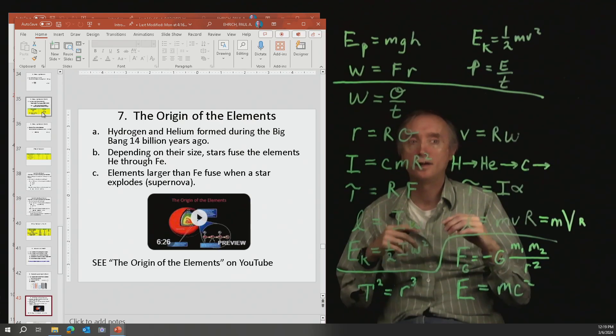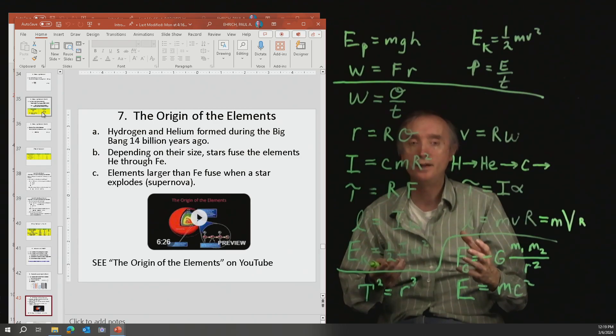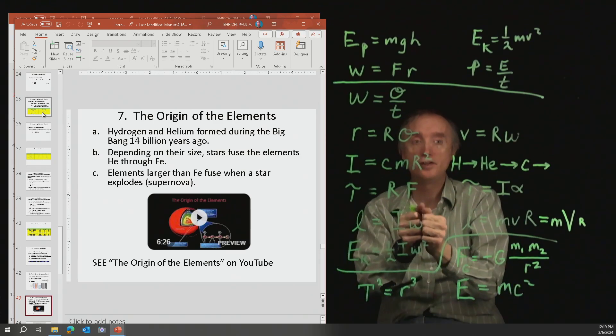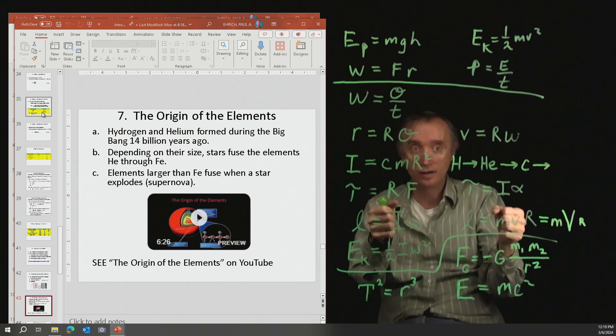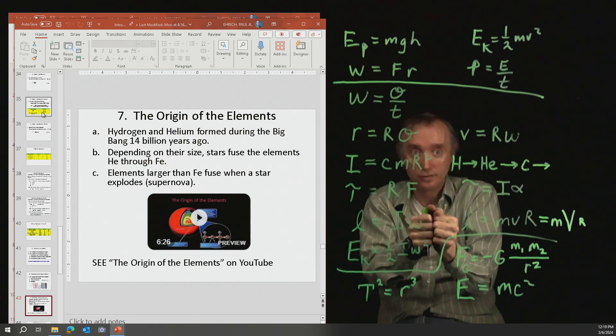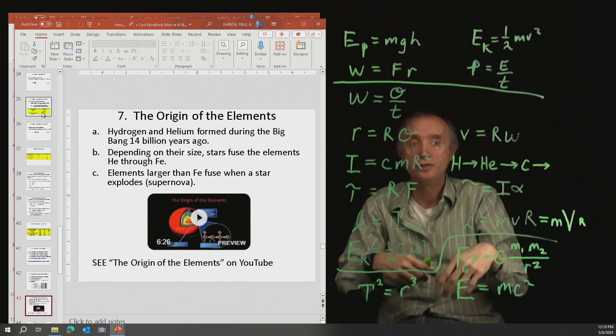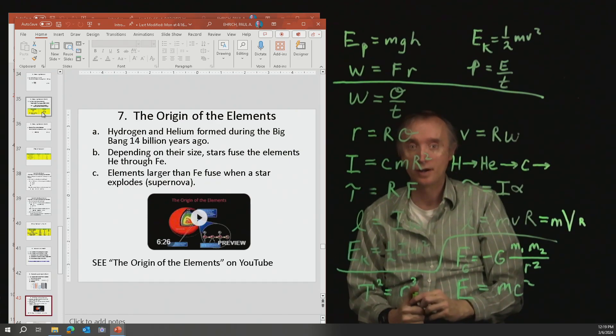Normally, with uranium, it wants to undergo fission and release energy. But you can take elements and smash them together. As long as you give it enough energy, you can create uranium.